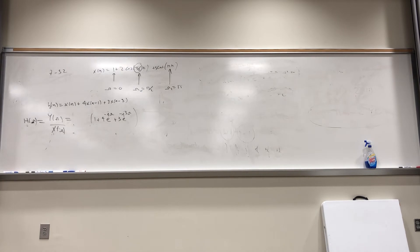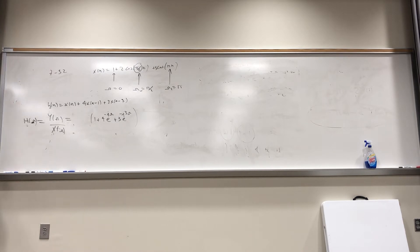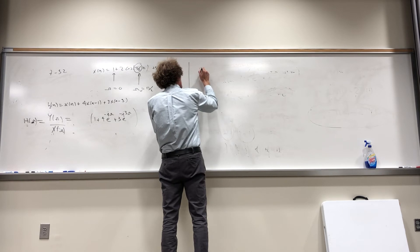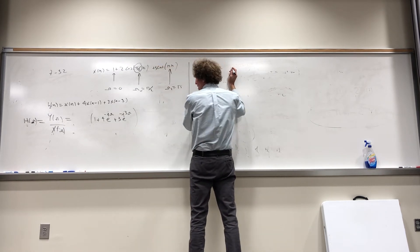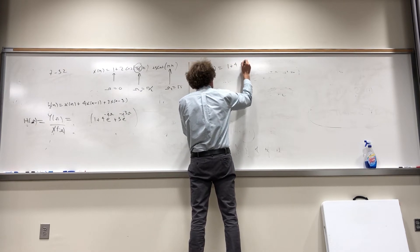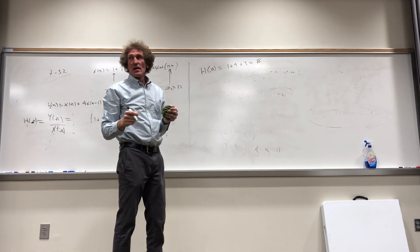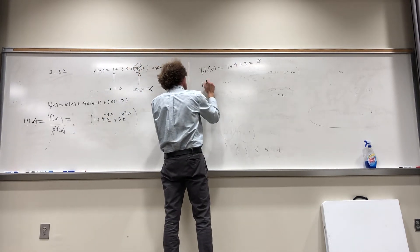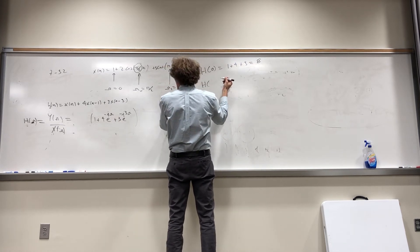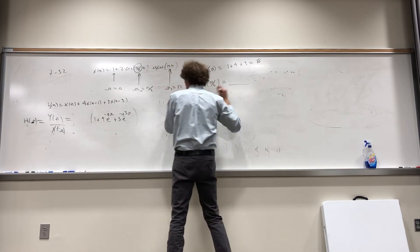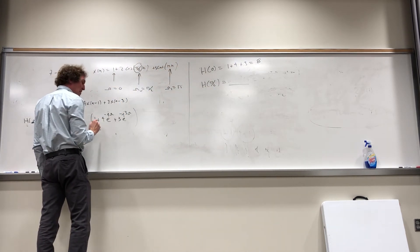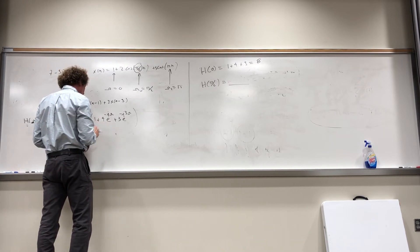When doing this problem, evaluate the filter at the different frequencies. I'll take you through the entire process. For H(0), just add up the numbers: 1 + 4 + 3 = 8. For H(π/2): put in ω = π/2. We get 1 + 4·e^{-jπ/2} + 3·e^{-j3π/2}. Now e^{-jπ/2} = -j, so the second term is -4j. And e^{-j3π/2} = +j, so the third term is +3j. That gives 1 - 4j + 3j = 1 - j.